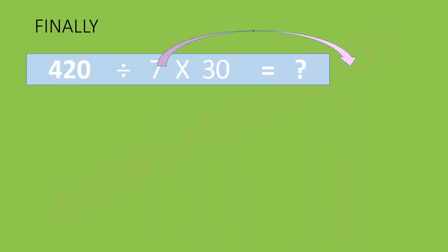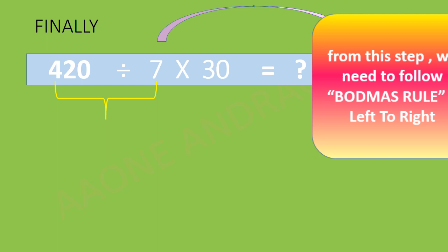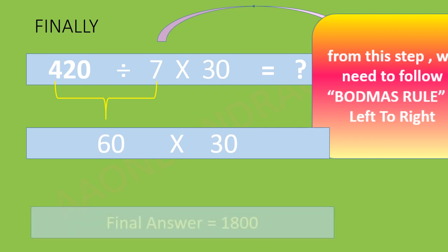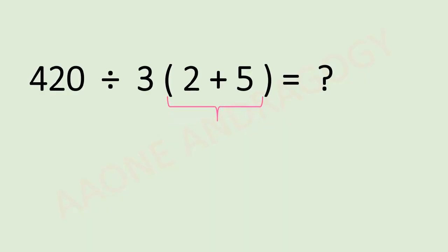In this step onwards, according to that, we can simply say first division, then multiplication. So what is 420 divided by 7? That is 60, and into 30. Simply, the final answer is 1800.